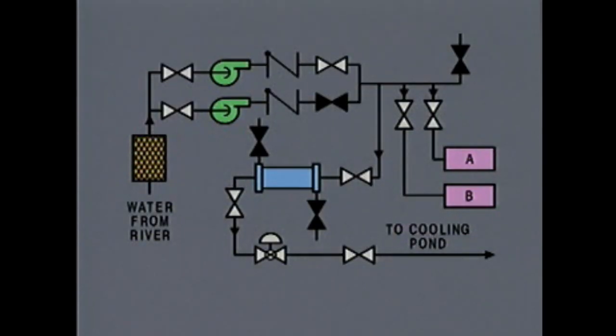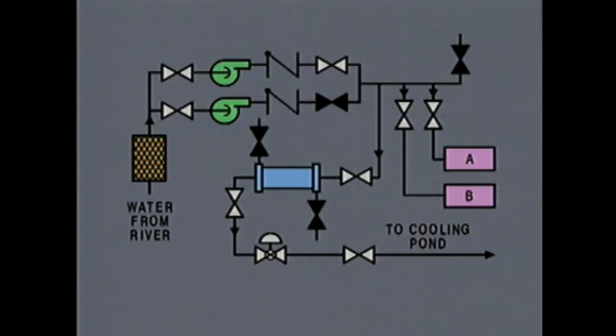Now let's see how a flow diagram can be used to help line up valves for a system start up. We'll be using a diagram of a cooling water system as we go through the steps to start up the system. Keep in mind that a flow diagram typically shows the positions of valves during normal operation, after the start up is complete.